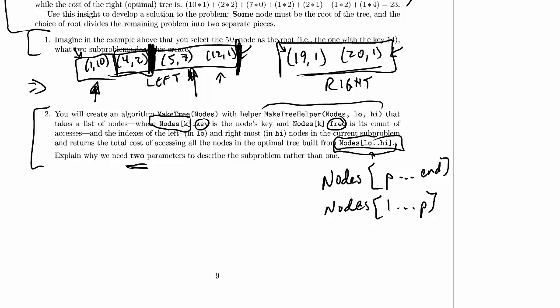In fact, as we build this binary search tree, we're going to end up with consecutive sequences of nodes that have not yet been put into the search tree. They're sort of sitting, waiting to be organized. And that's exactly what we can describe with this low-to-high format. So the reason we need two parameters is because any arbitrary consecutive sequence within the original problem may be a subproblem.